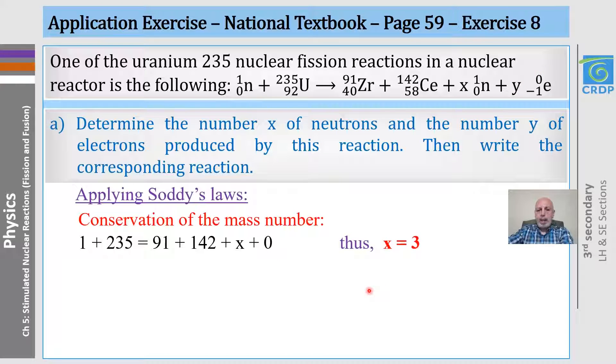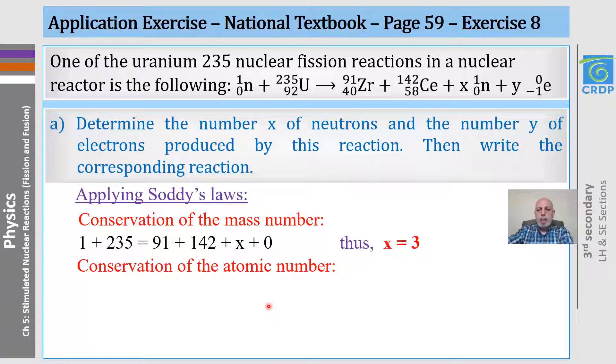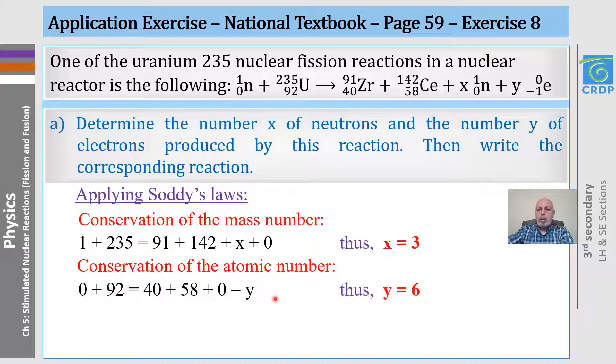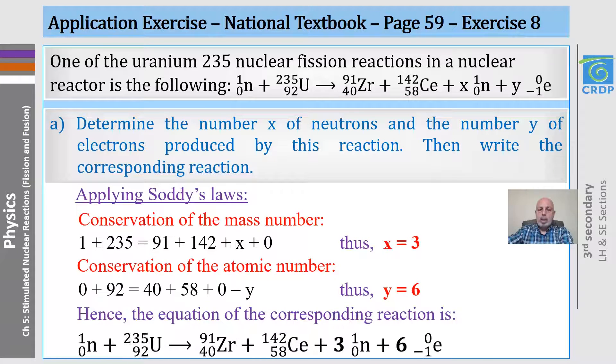And the second law is the conservation of the atomic number, and it's written like this, with X times 0 equals 0, and Y times minus 1, and this is why we got minus Y here. Thus, Y is equal to 6. The equation can be written in this way.